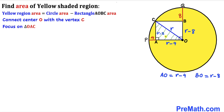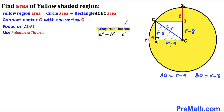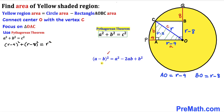We'll solve for radius r using the Pythagorean theorem: A² + B² = C². Here A is (r − 4), B is (r − 8), and C is r. Substituting gives (r − 4)² + (r − 8)² = r². Expanding using the identity (A − B)² = A² − 2AB + B², we get r² − 8r + 16 plus r² − 16r + 64 equals r².